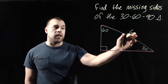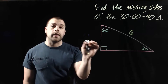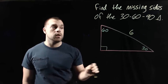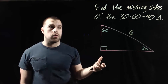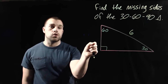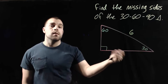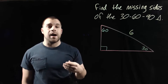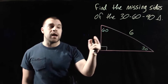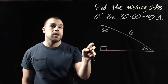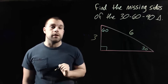In this example, we're given the length of the hypotenuse of this 30-60-90 triangle, and we want to find the length of the two legs. If we're given the hypotenuse and want to find the shorter leg — normally we'd double the short leg to get the hypotenuse — but we're going in the opposite direction, so instead of multiplying by 2, we divide by 2. So if we take 6 and divide by 2, we get 3.